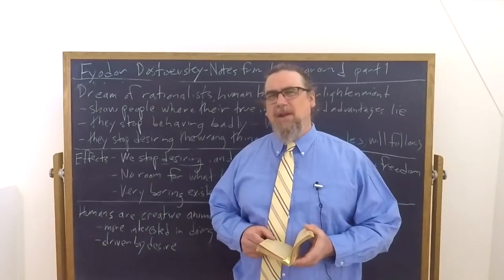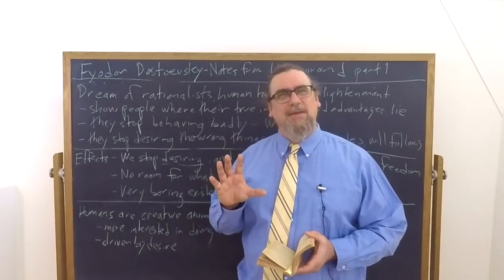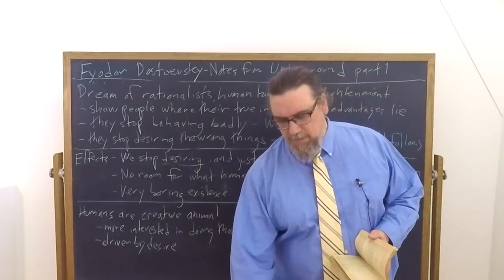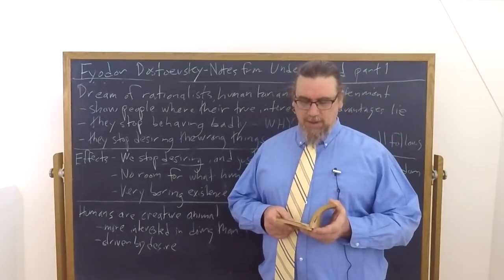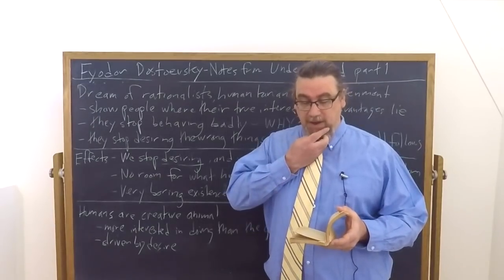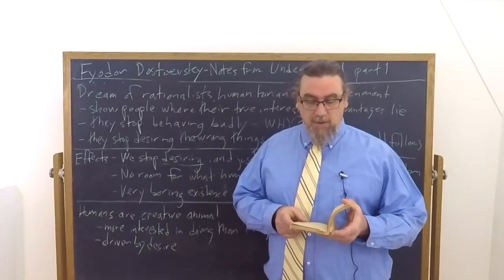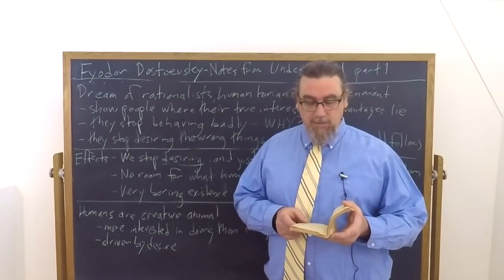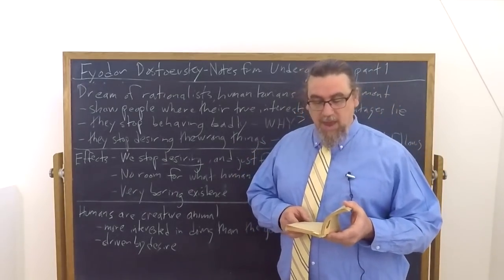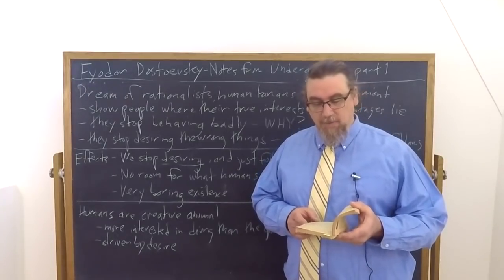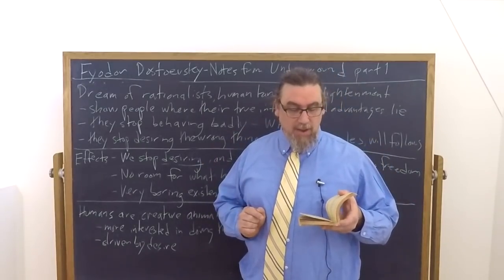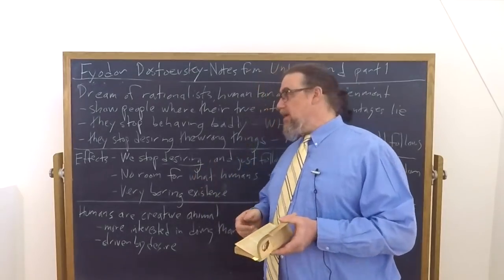Now, what if that were to happen? Dostoevsky doesn't actually think that you're going to manage to pull this off, but let's just say it did. Let's say that you had all of these resources and you started changing human beings and you managed to change human nature. He says when desire merges with reason, then we will reason instead of desiring. Once they can be computed for the day is bound to come and we'll understand what governs what we now describe as our free will. Then we may really have some sort of tables to guide our desires like everything else. So if a man sticks his tongue out at someone, it's because he cannot not stick his tongue out at that person.